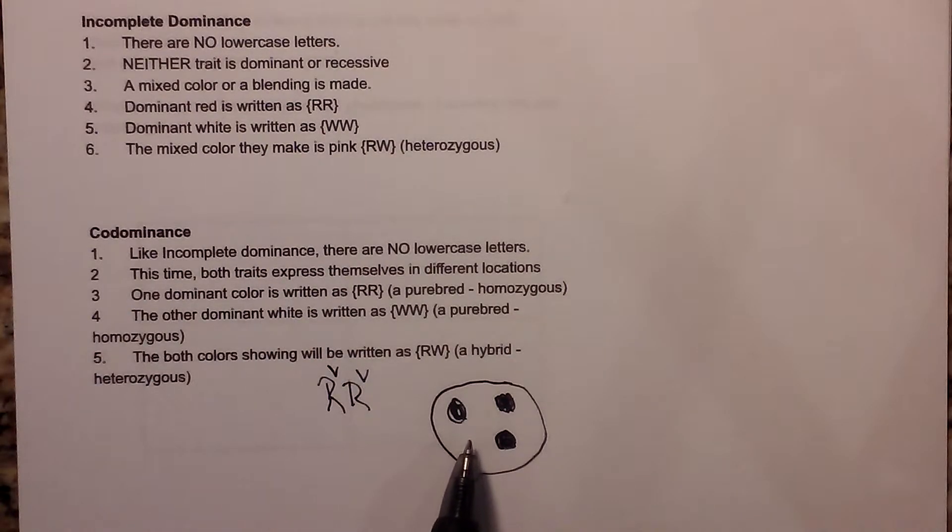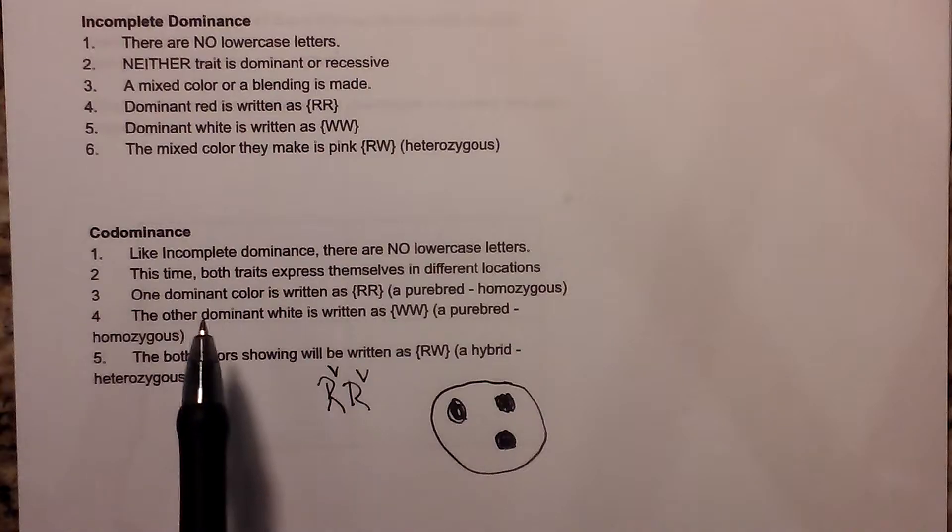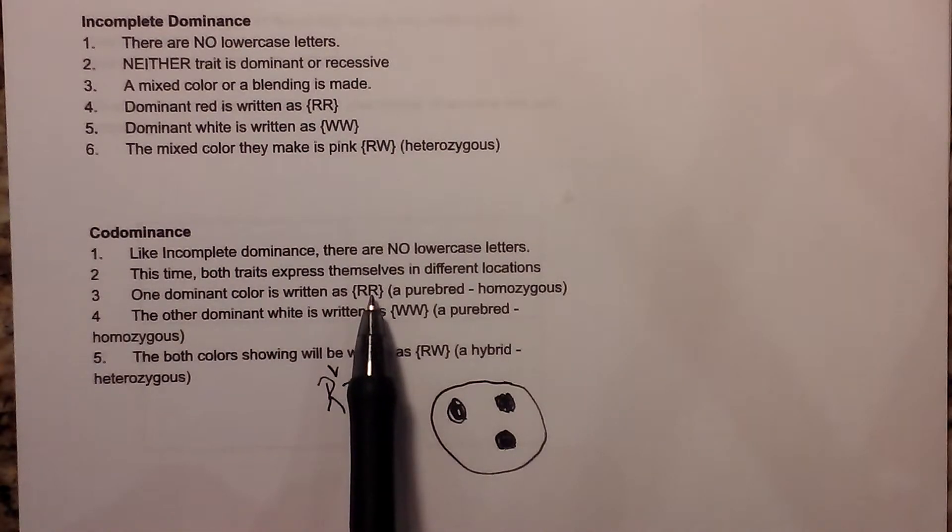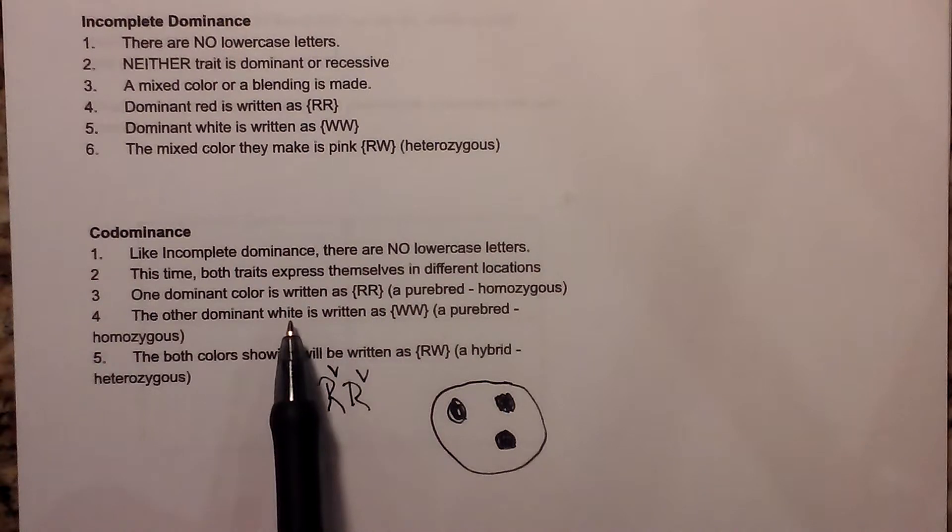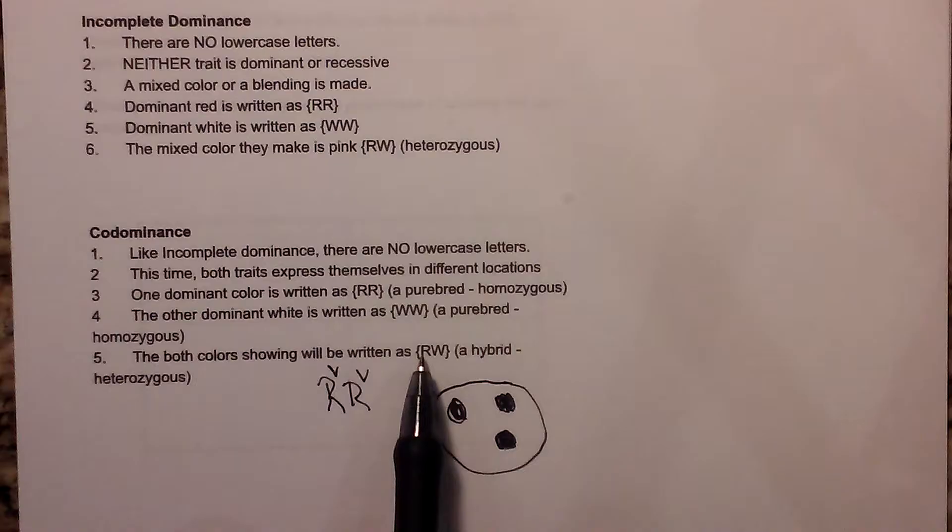If this was a dog or a cow, you have the black and the white both expressing, and sometimes you'll see these subscripts. One dominant color is written as capital R capital R, the other, for example white, is WW, and then both would be RW.